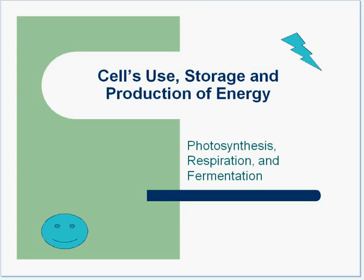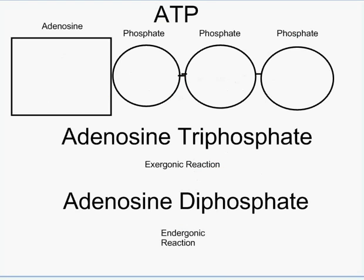On the cellular level, something called ATP is actually the molecule that our cells use as our fuel source or our currency. ATP stands for adenosine triphosphate. The prefix 'tri' means three, and it represents the three different phosphate groups that are located in ATP.